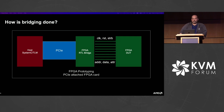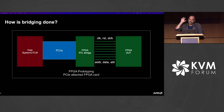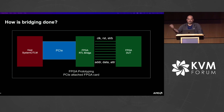For FPGA prototyping, the bridge is actually RTL logic synthesized into the FPGA, sitting between the DUT and the rest of the simulation. You configure it with all the transaction details — the address, width, number of beats, and all the attributes — and the bridge replays it toward the DUT. This works both ways, so if the DUT wants to DMA back into the SystemC environment, that also works.